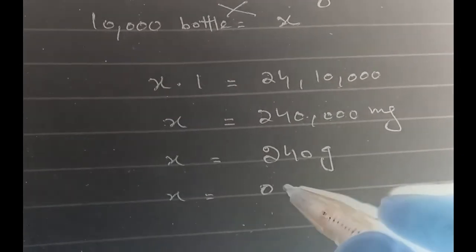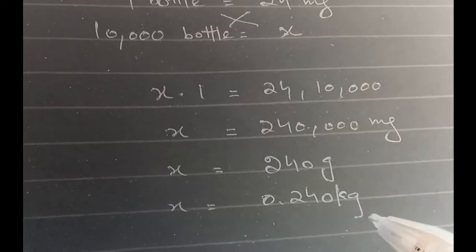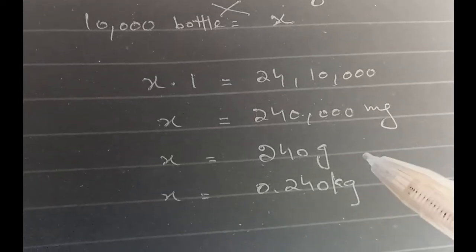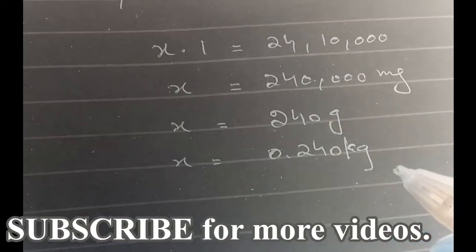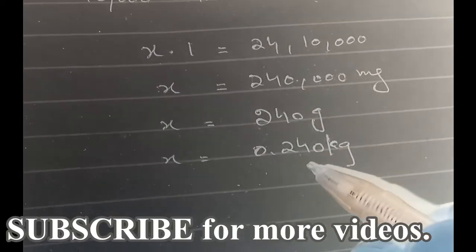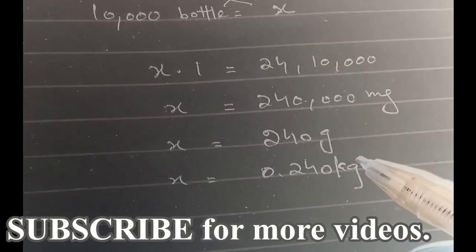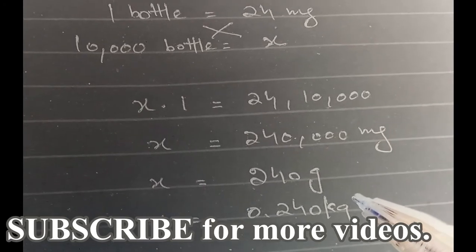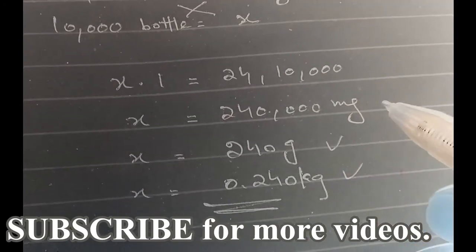Or also in kg form: 0.240 kg, as one kg has 1000 grams in them. So actually 240 grams of the active pharmaceutical ingredient will be needed to make the whole batch. So this is our answer.